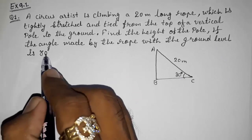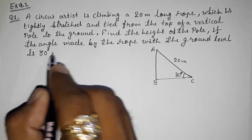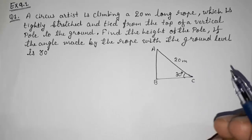Find out the height of the pole if the angle made by the rope with the ground level is 30 degrees. So before starting this sum, I would like to ask you if you know all the ratios in the previous chapter.